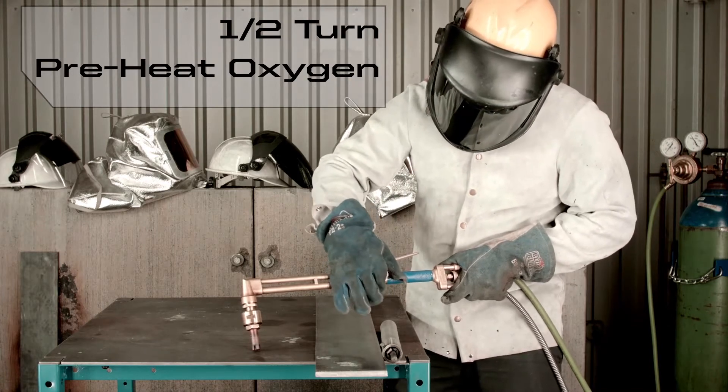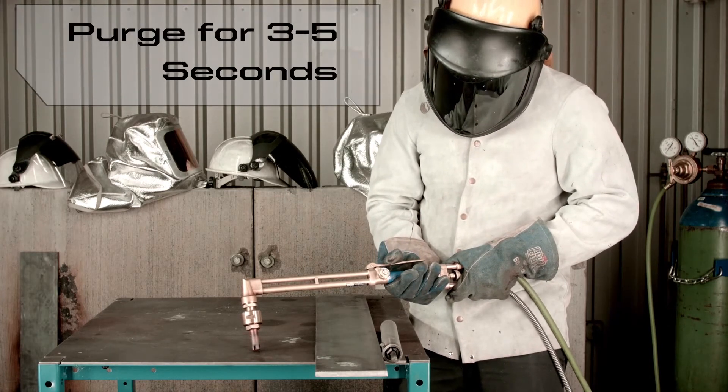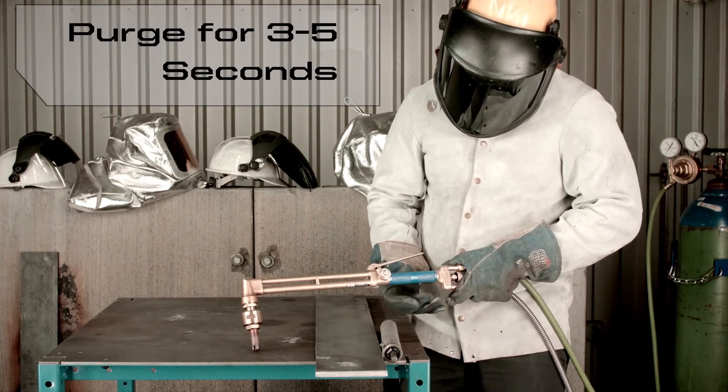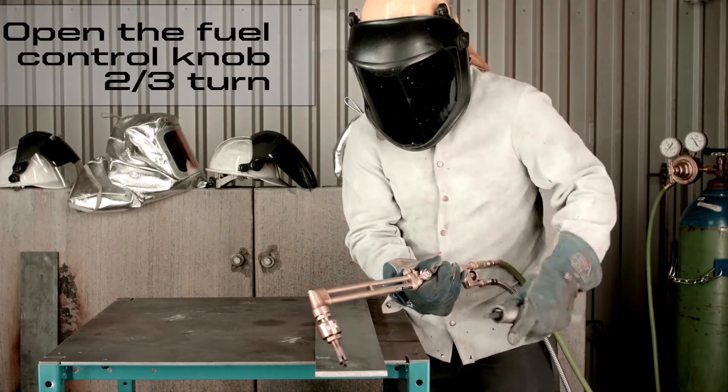Start by turning on the preheat oxygen knob one half turn. Then purge the torch by depressing the high pressure oxygen trigger for 3 to 5 seconds. Place the torch near where you'll start your cut and turn on the fuel control knob two thirds of a turn.